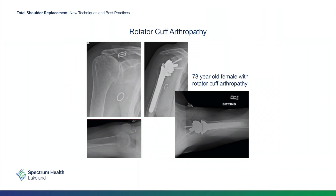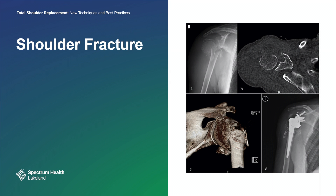When we do this operation, we basically remove the ball, put a base plate where the socket was with a ball on that, the stem goes down the canal, and it has a socket on it. This is a shoulder fracture — the upper left slide shows an x-ray where the ball has completely displaced from its position against the socket. The lower left slide is a CT showing this break very dramatically, and the lower right slide shows a reverse shoulder replacement to address this.